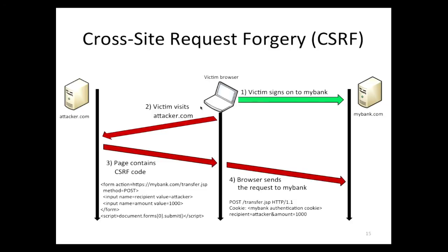That brings us to a perfect segue — cross-site request forgery, CSRF. CSRF allows an attacker to force you, the victim, to send a forged request under the covers to an application, thereby executing some functionality without your knowledge. Executing that functionality usually has some nice benefit for the attacker. Let's walk through the classic example. In step number one, you're doing some online banking — you go to mybank.com, paying some bills, transferring some funds, buying or selling some stocks.